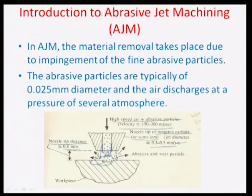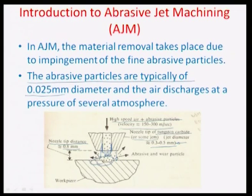There are illustrations where an impinging jet of abrasives passes through a mask to imprint features from the mask onto the material surface. The typical diameter of abrasive grains used is about 0.025 mm or 25 microns. Air discharges at a pressure of several atmospheres, creating the high velocity needed to emanate from the nozzle.